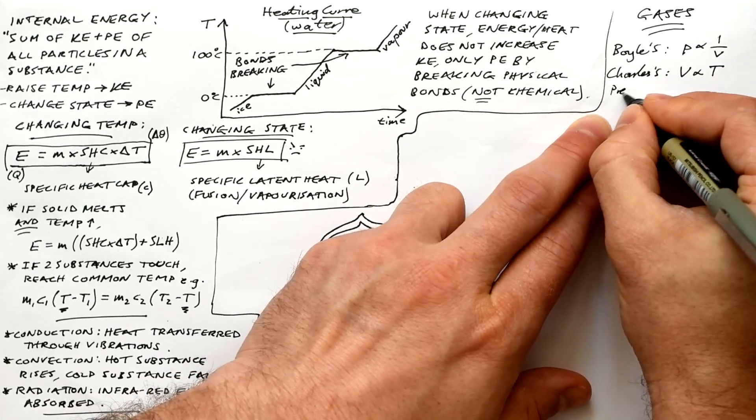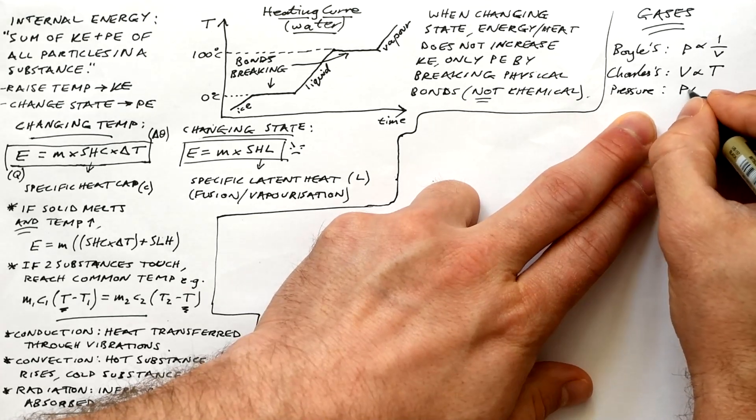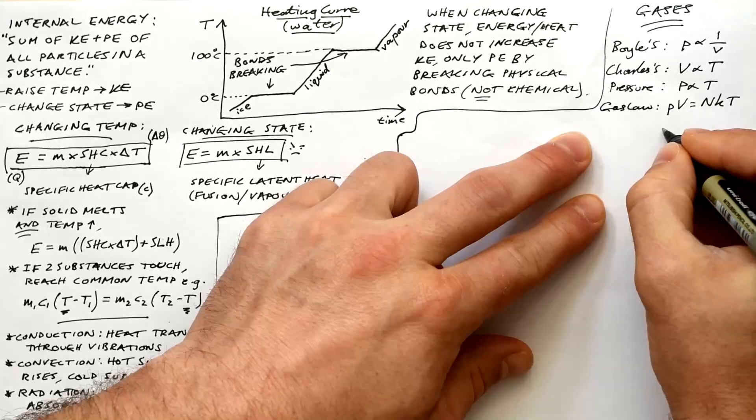Charles's law, volume proportional to temperature. That's for a constant pressure. And the pressure law, sometimes called the Gay-Lussac law, pressure is proportional to temperature for a constant volume.